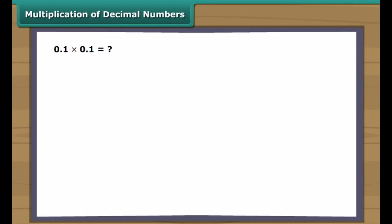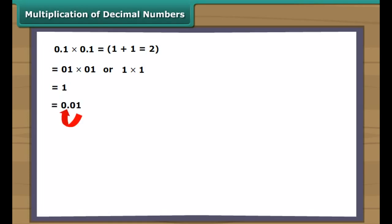Multiplication of decimal numbers: let us learn the multiplication of two decimal numbers like 0.1 and 0.1. First, the decimal numbers are multiplied as whole numbers, ignoring the decimal point. Then the number of digits to the right of the decimal point in both numbers is added. Finally, the decimal point is placed in the answer by starting at the right and moving a number of places equal to the sum of the decimal places in both numbers multiplied.